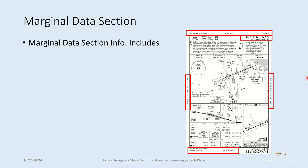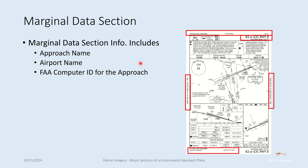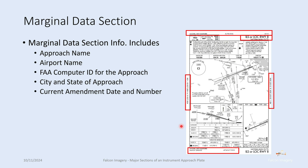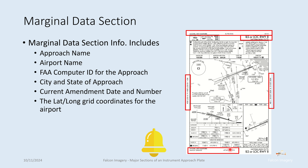Under the marginal data section, the information included is the approach name — in this case ILS or localizer runway 8 in Laconia — the airport name, Laconia Airport, the FAA computer ID for the approach, the city and state (Laconia, New Hampshire), and the current amendment date and number. There's also the status of when it was last released and whether it's current, plus the latitude/longitude information for the airport.